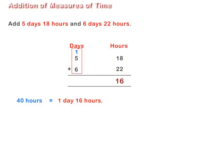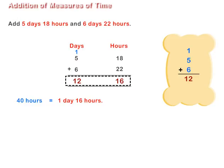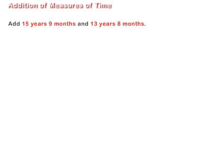Carry days to days and add, that is, 1 plus 5 plus 6 equal to 12 days. Thus, the sum of 5 days 18 hours and 6 days 22 hours is 12 days 16 hours.